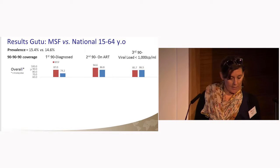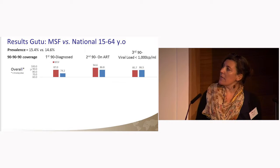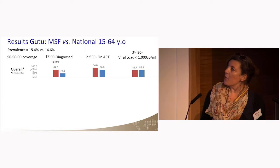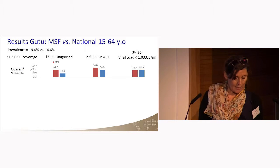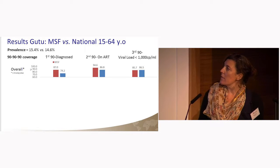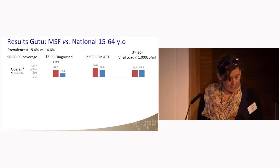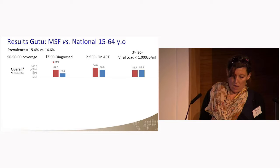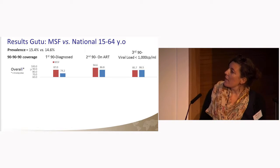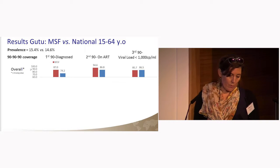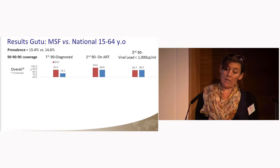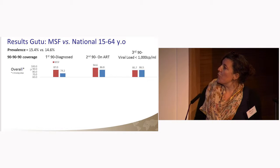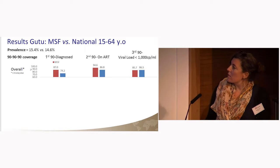UNAIDS has recently set the 90-90-90 targets: by 2020, 90% of people living with HIV will be diagnosed (the first 90); 90% of diagnosed people will be enrolled on ART (the second 90); and 90% of people on treatment will have fully suppressed viral load (the third 90). MSF results are shown in red and the national survey in blue. Overall, we have good results in 90-90-90 coverage, and we can see a difference between GU2 and the national level for the first two 90s, but no difference for the third.